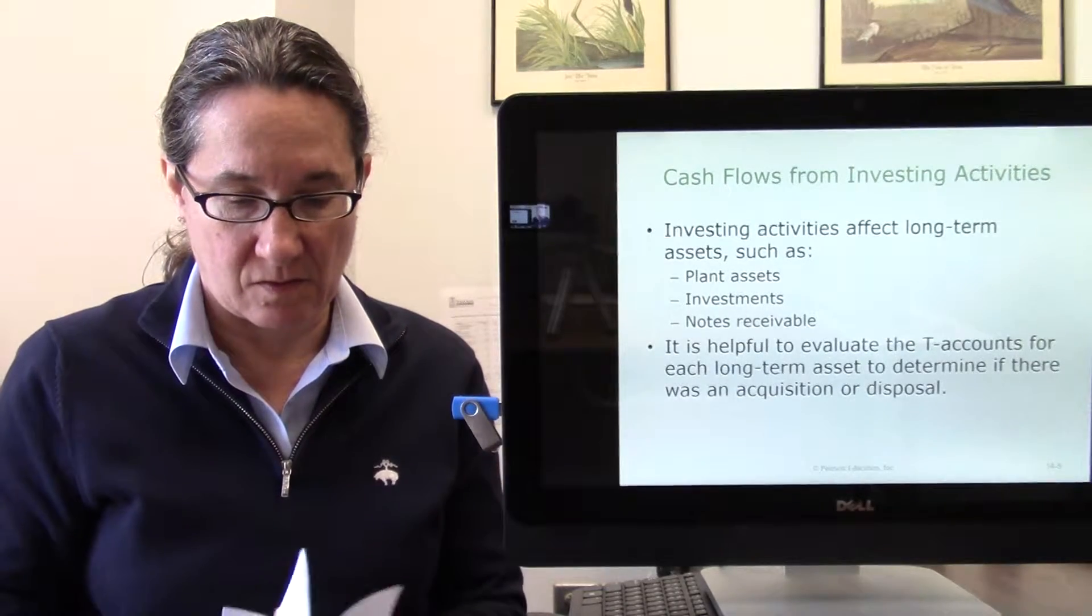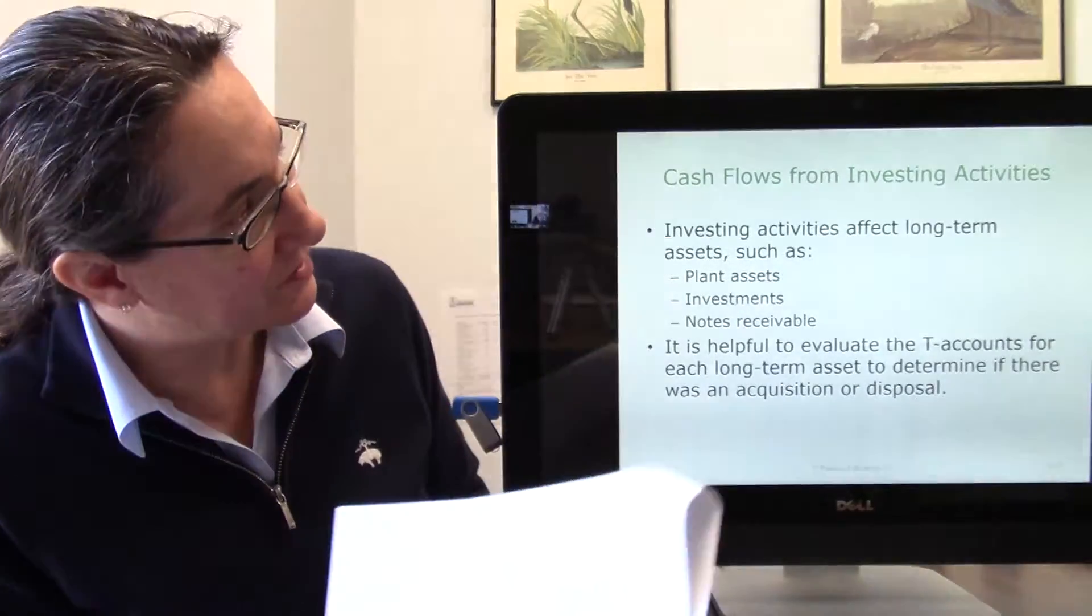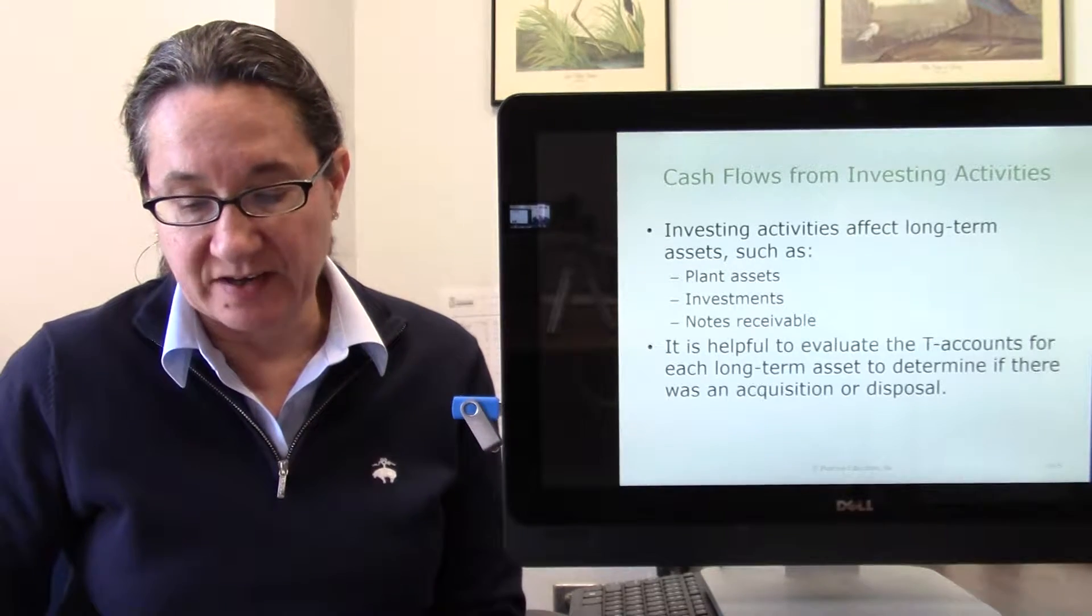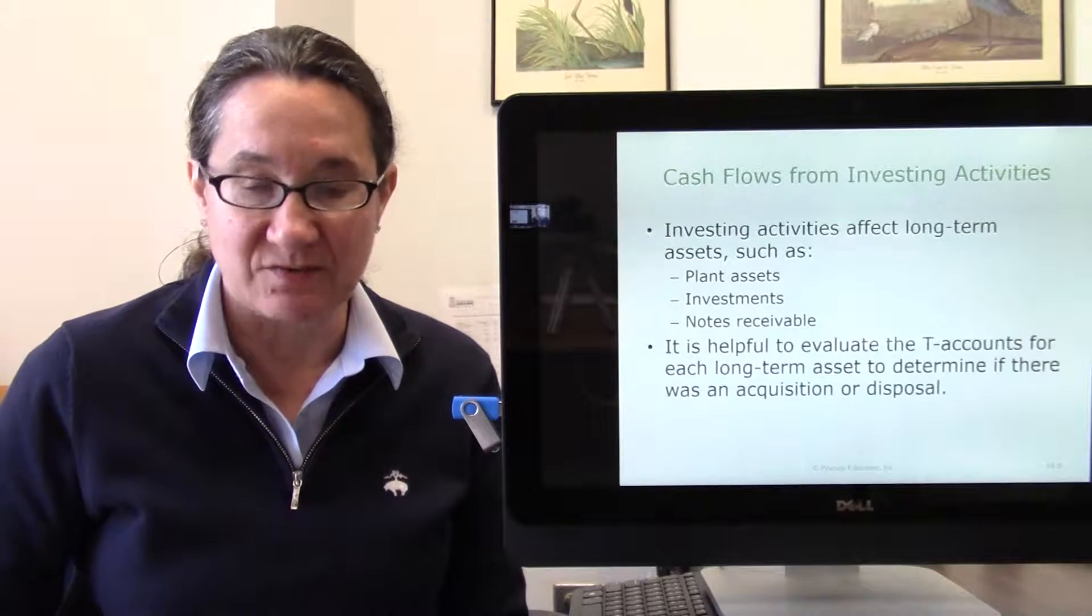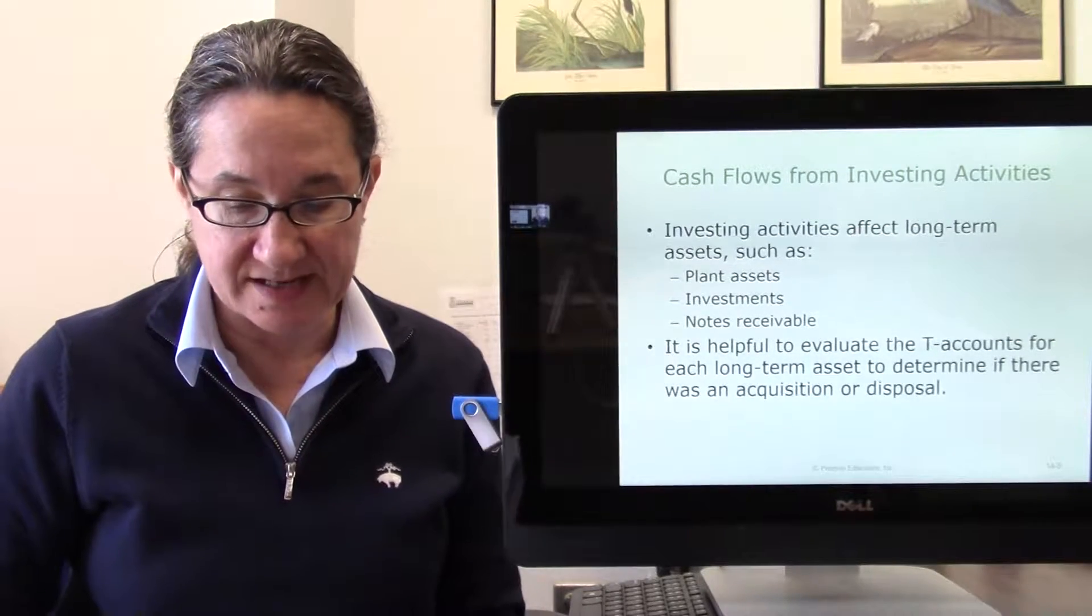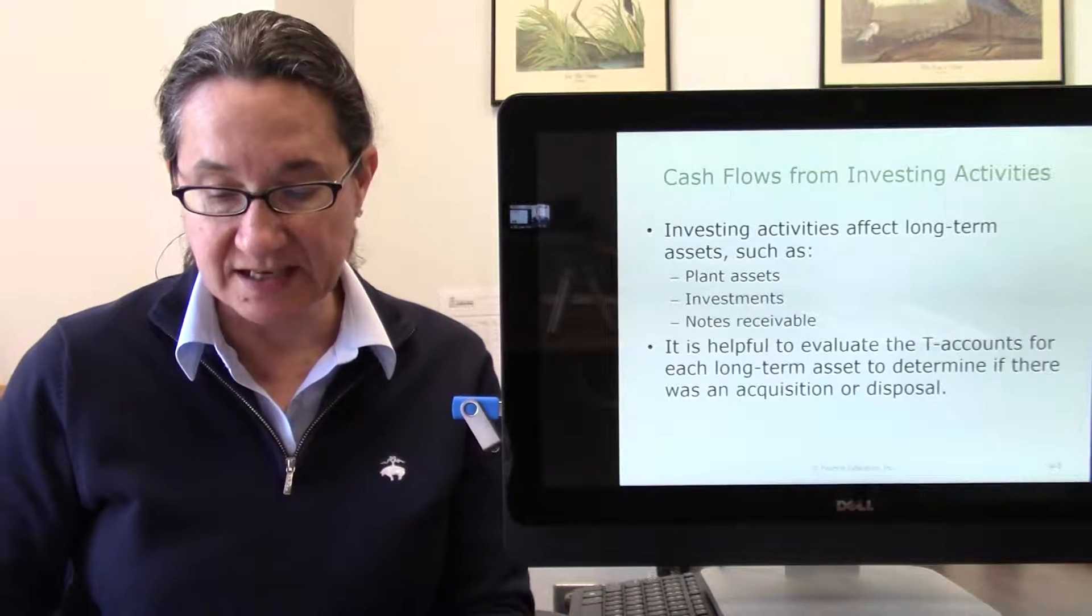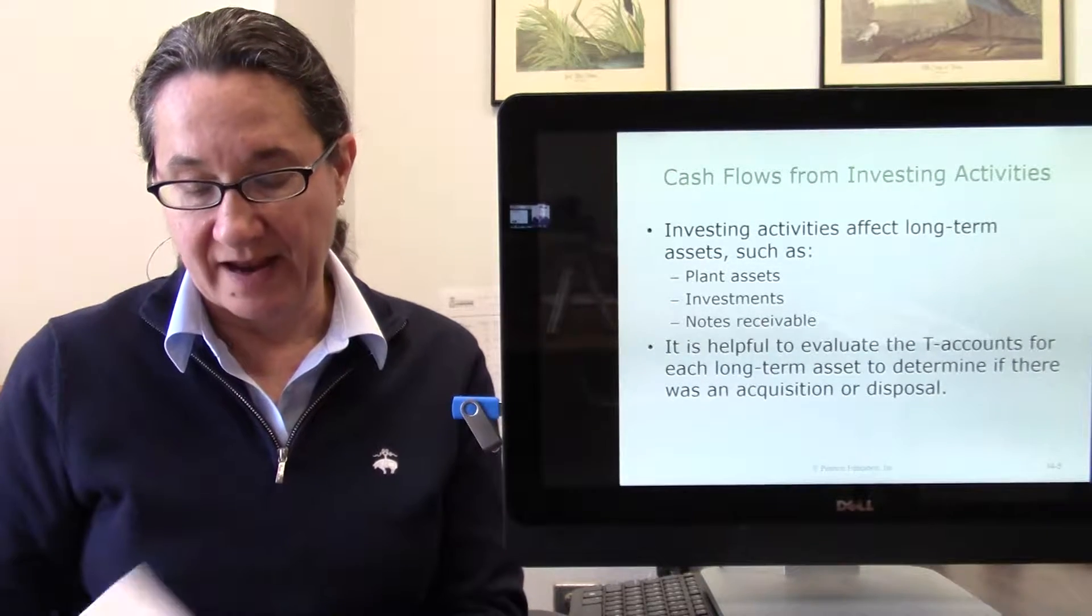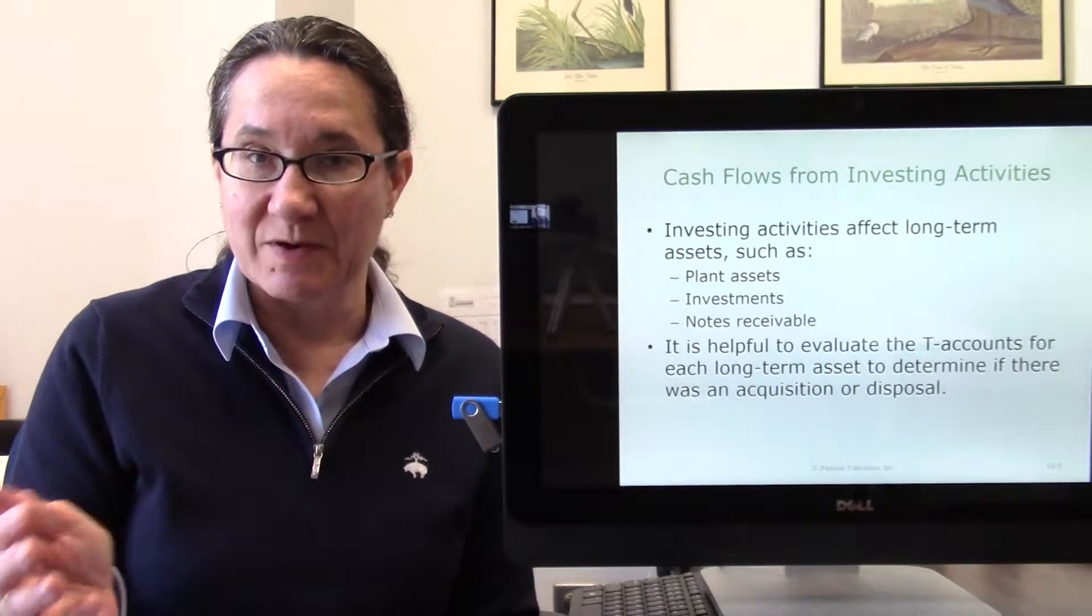The next section is cash flows from investing activities. Investing activities affect long-term assets such as plant assets, investments, and notes receivable. When computing investing cash flows, it is helpful to evaluate the T-accounts for each long-term asset. A T-account will show if there was an acquisition or disposal that happened that year. So you have to understand what came and went.